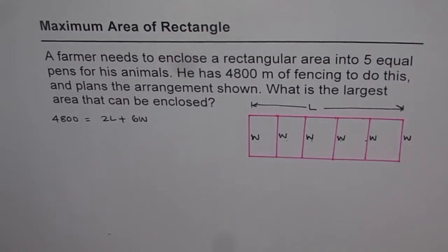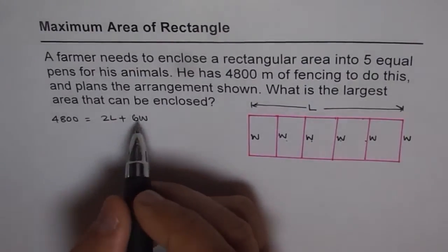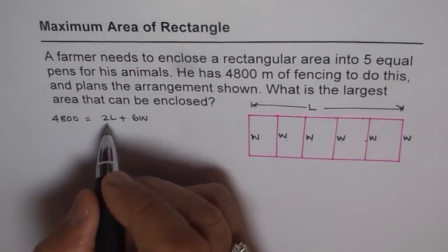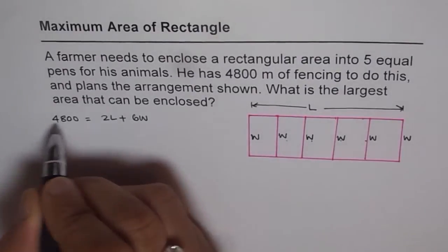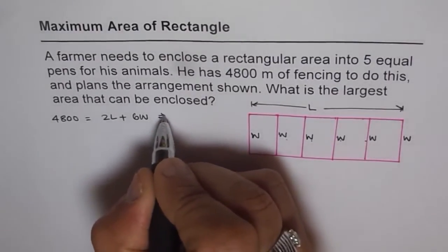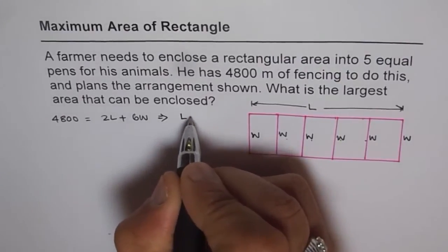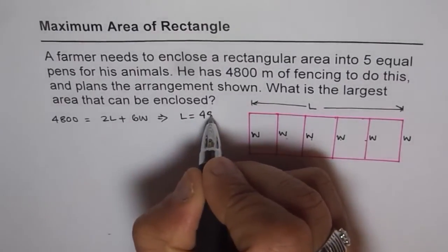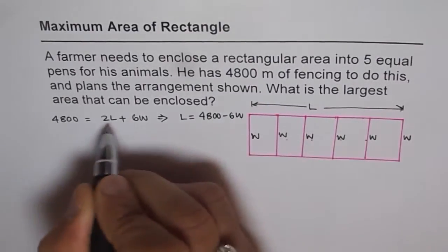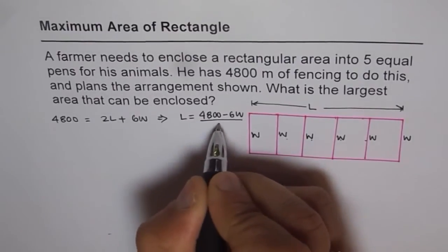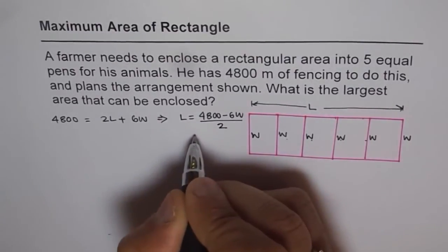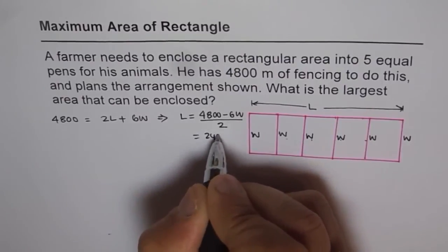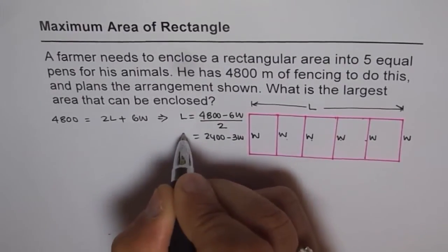This equation relates length and width. The idea is to get an equation in one variable. So we find L in terms of W: rearranging gives 4800 minus 6W, then dividing by 2, we get L equals 2400 minus 3W.